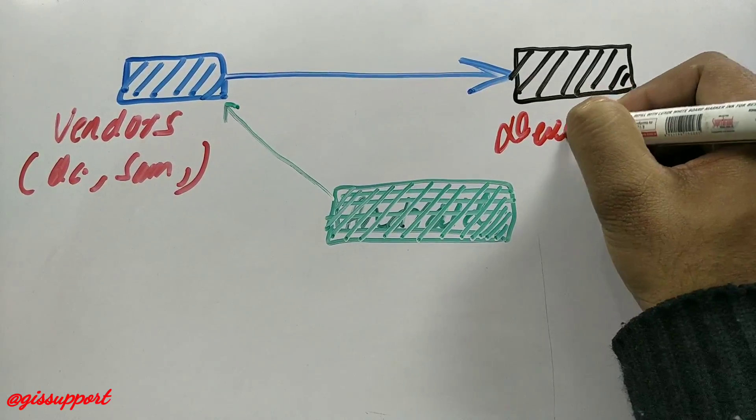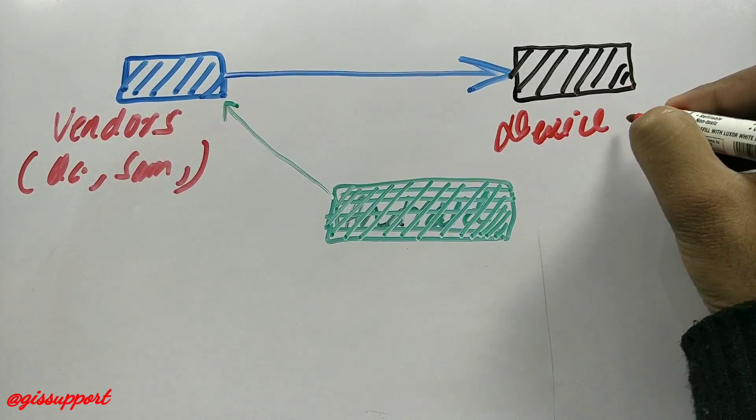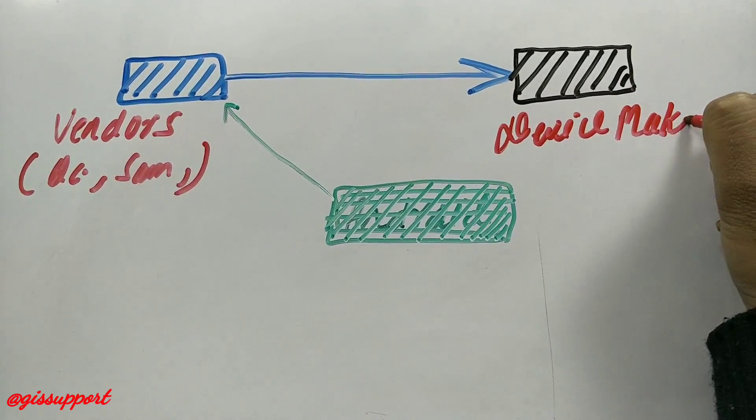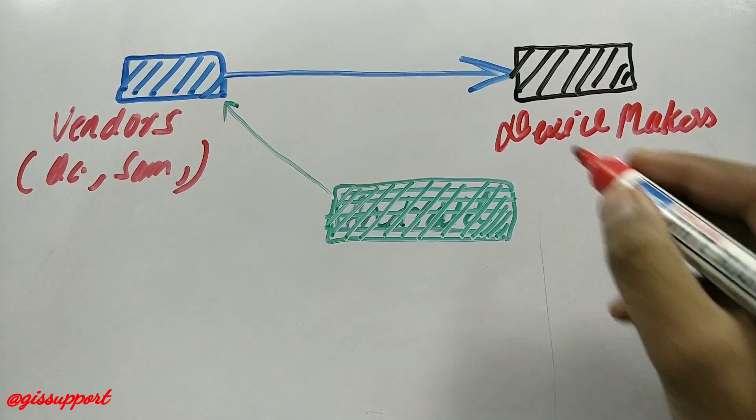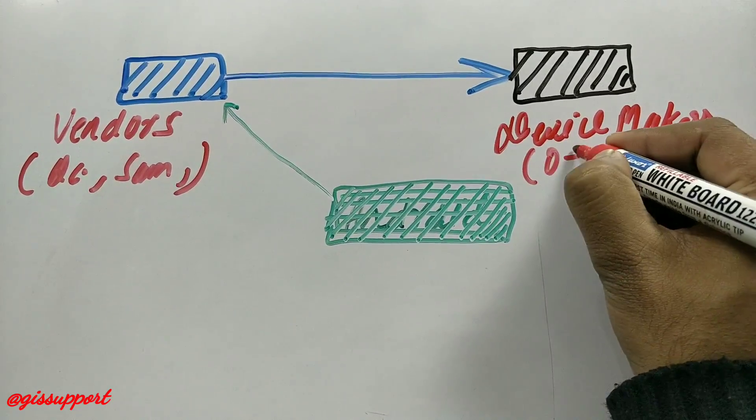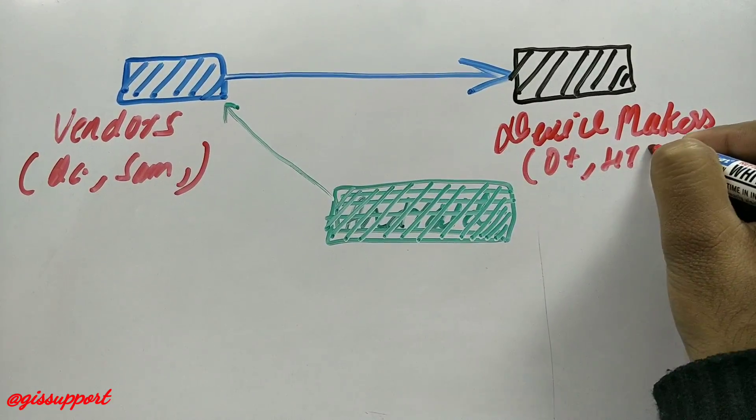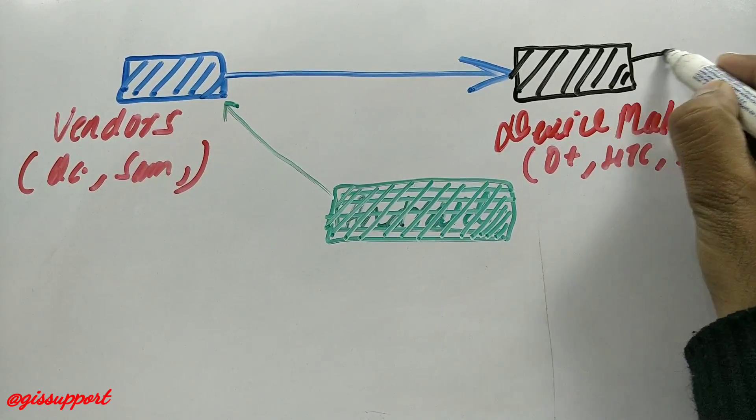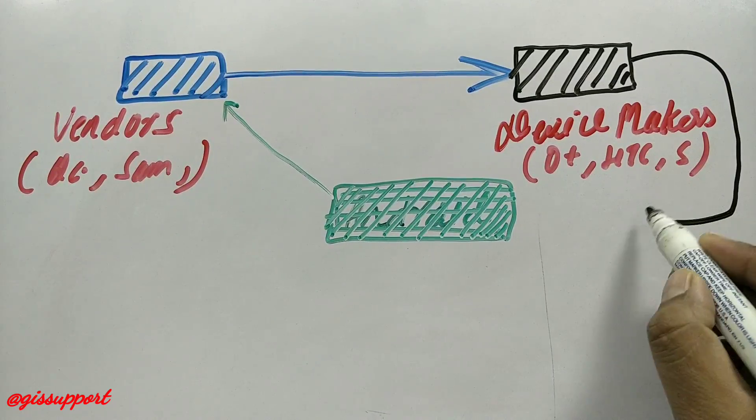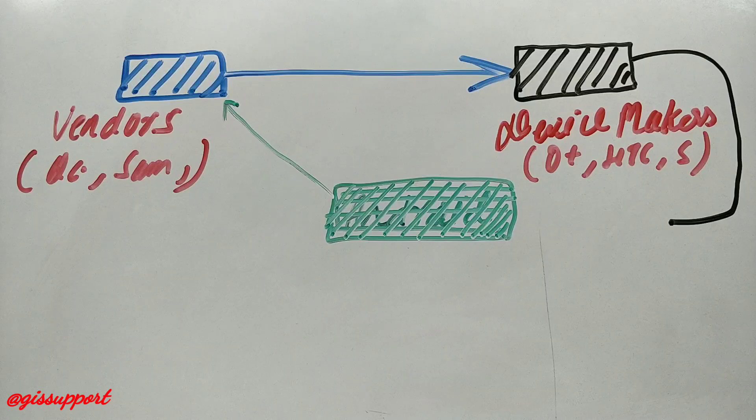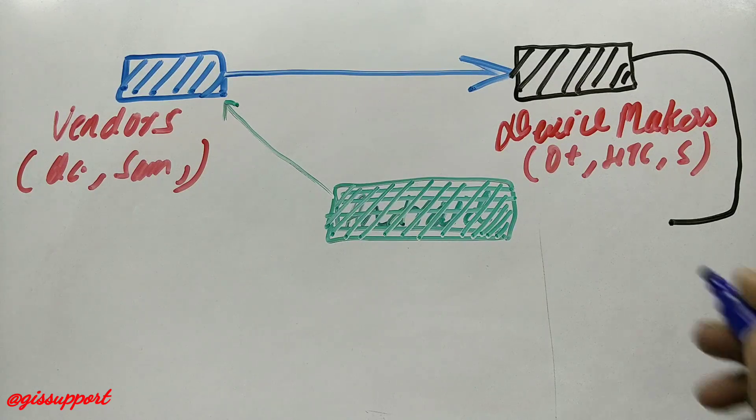So they create their vendor test suites. Each company who is going to take their processor, for example Qualcomm, they need to comply or certify their product using that vendor test suite. Now they share their code to the device makers. Any company who creates a smartphone like Sony or HTC, they are being called as device makers. These are the companies who have to actually implement first their vendor test suite, then they need to change their hardware software code itself. The complete ROM is created by the device manufacturer.